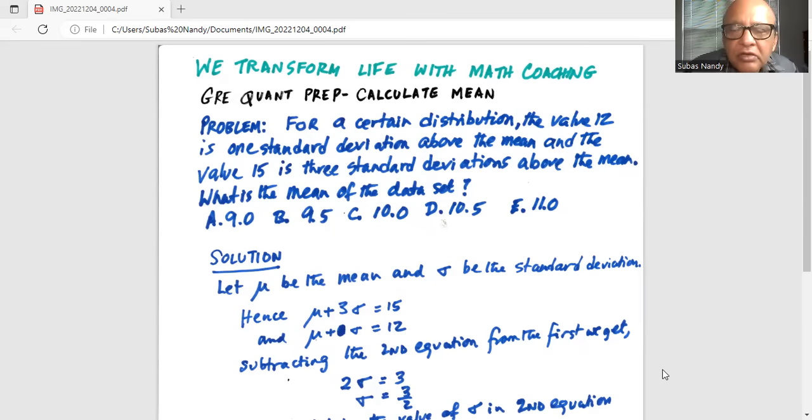So I will use the common statistical notation, which means mu, that is the small Greek m, is the mean, and sigma, which is small Greek s, is the standard deviation.